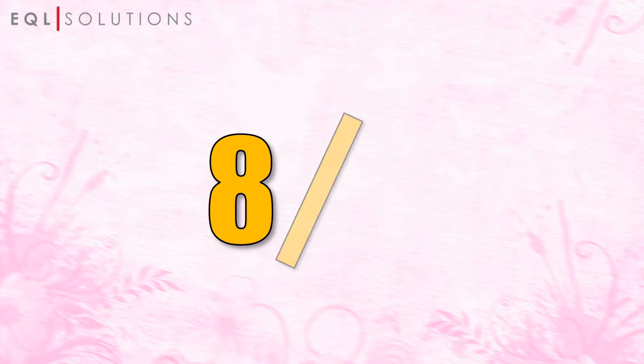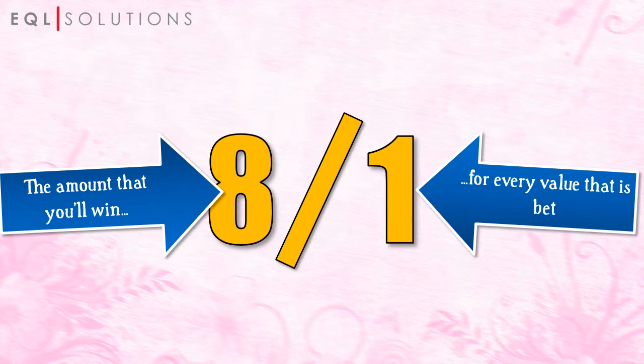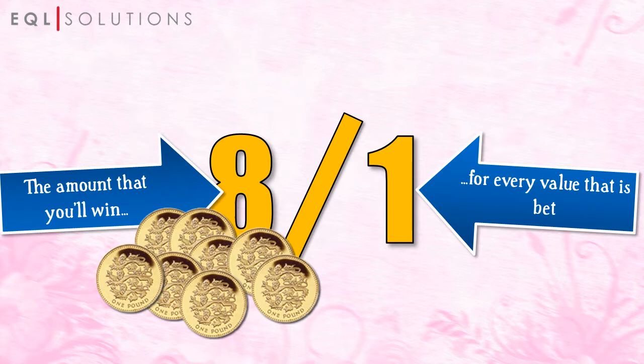Betting odds, on the other hand, are usually written like this, with both numbers side by side. The first number shows you the amount that you'll win for every value of the second number that you bet. So odds of 8 to 1 mean that you'll win 8 pounds for every one pound that you bet. And of course, you'll get your original stake back too.